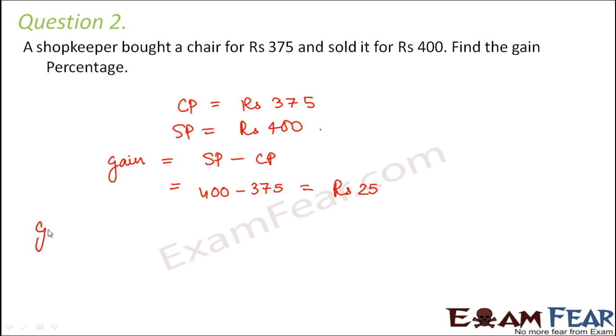Now you have to calculate gain percentage. To calculate gain percentage, you will have to write gain divided by cost price into 100%. So this can be written as 25 divided by 375 into 100%. So this would be 5. 5 is a 25. 5 into 75 is 375.